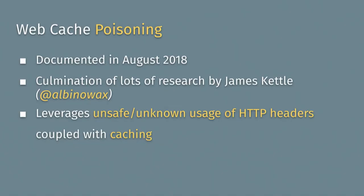Web cache poisoning — in my opinion the most interesting part of web exploitation, because no one really knows about it yet. It's still relatively new; James Kettle released this at Black Hat last August. Go watch his talk on YouTube — it's 50 minutes, half of which is real-world bug bounty examples. Web cache poisoning combines two tricks: using unsafe or unknown HTTP headers together with very aggressive caching that probably shouldn't be caching in the first place.